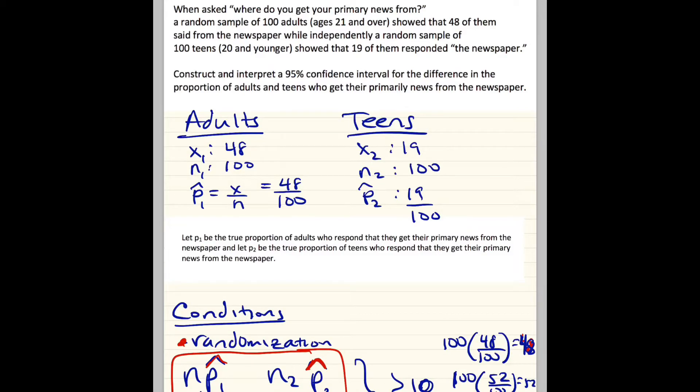Hey guys, welcome back. We're going to do one problem on confidence intervals for the difference in proportions. So let's just get right to it. When asked where do you get your primary news from, a random sample of 100 adults showed that 48 of them said the newspaper, while independently, a random sample of 100 teens showed that 19 of them said the newspaper. Construct and interpret a 95% confidence interval for the difference in proportion of adults and teens who get their primary news from the newspaper.